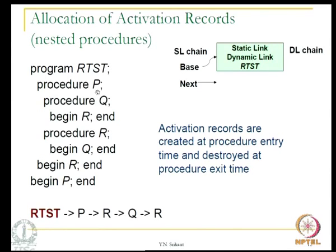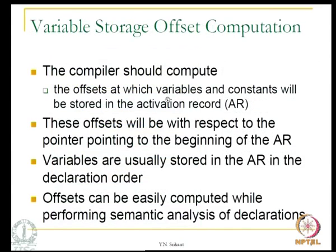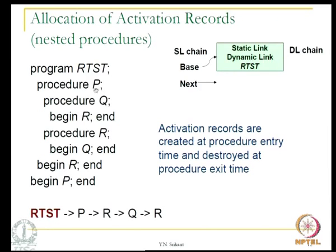Now let us look at activation records with nested procedures. If there is no nesting — for example, if main, R, Q, and R are all at the same level as in C — then the allocation and deallocation of activation records is very simple. As the call sequence progresses, activation records are created; as procedures return, the records are returned to the storage pool. However, if we have nested procedures — one language with such nested procedures is Pascal — it is necessary to know the implications of nesting procedures within other procedures.